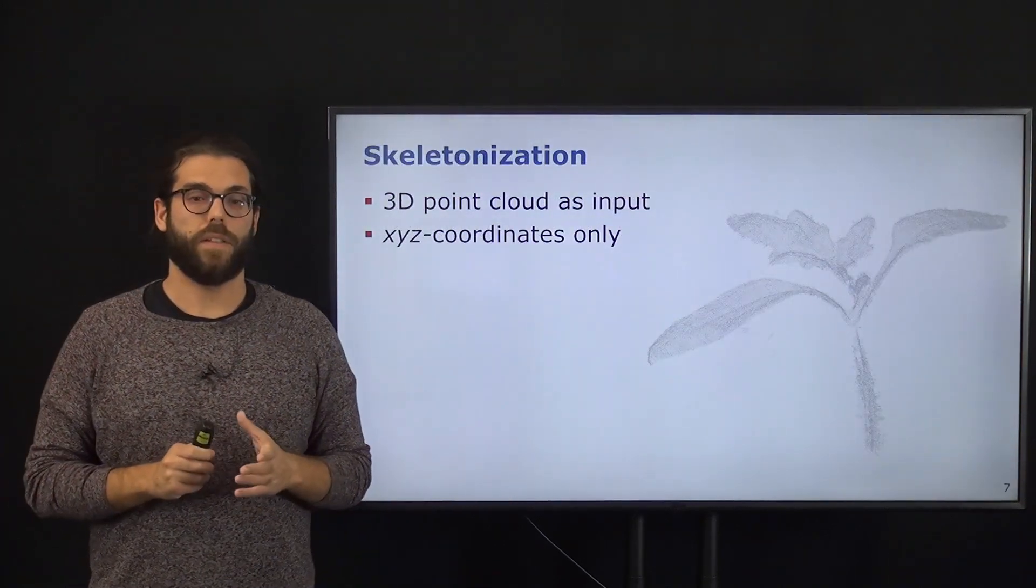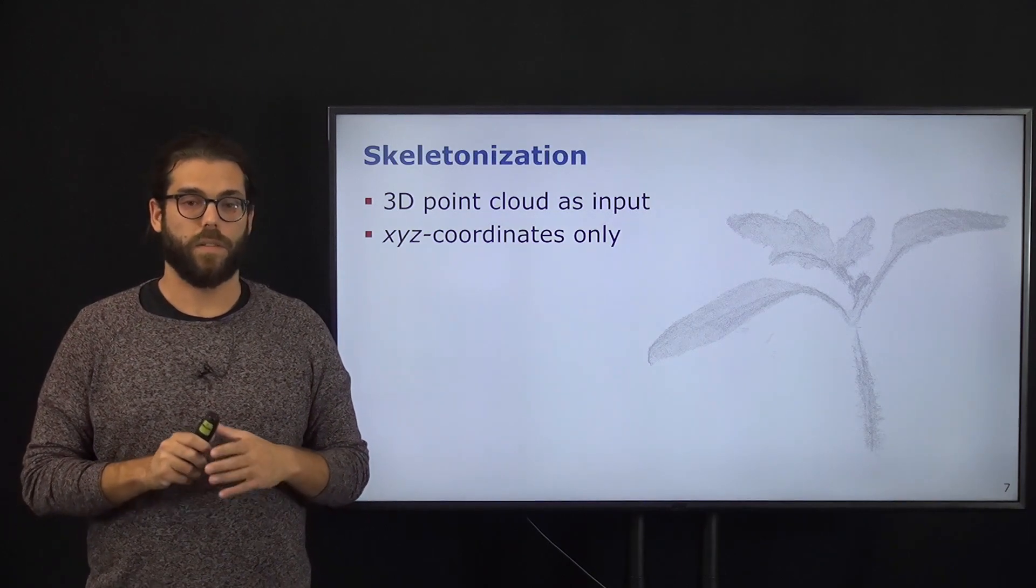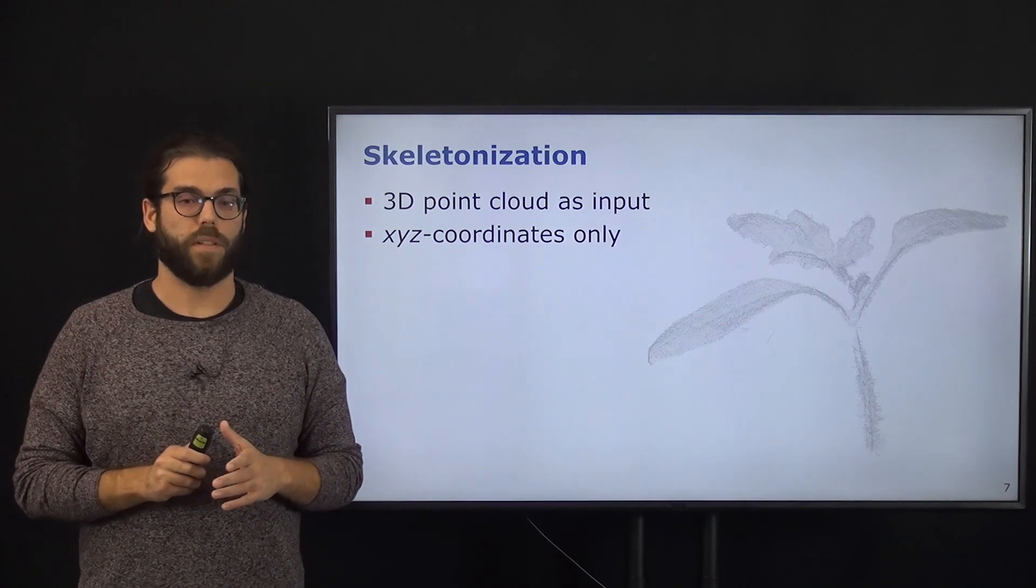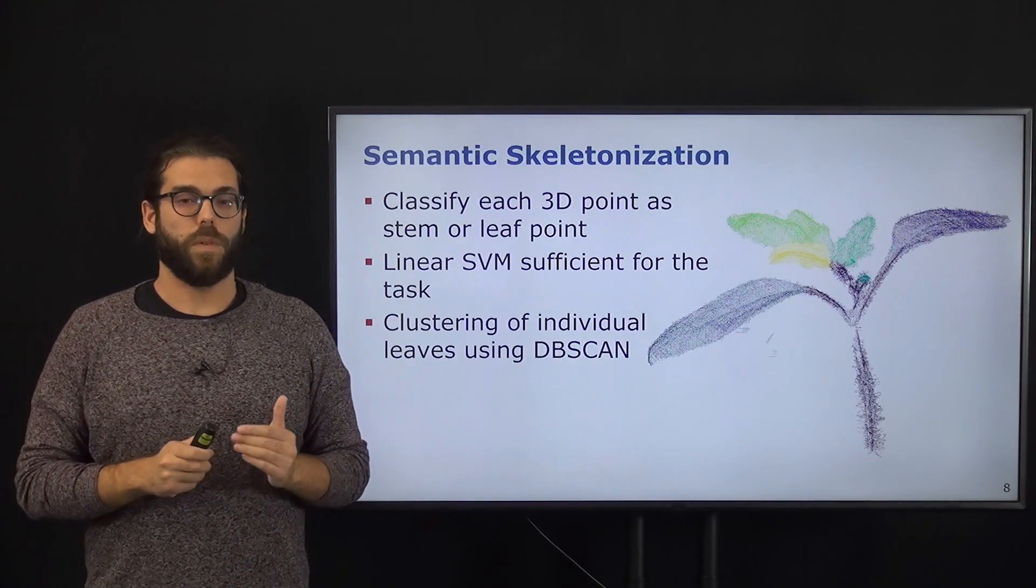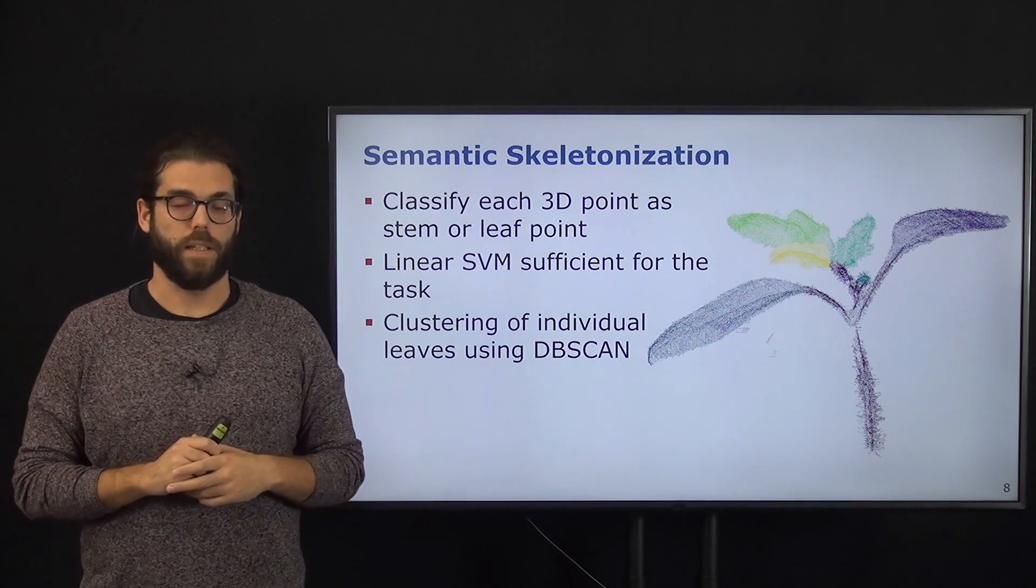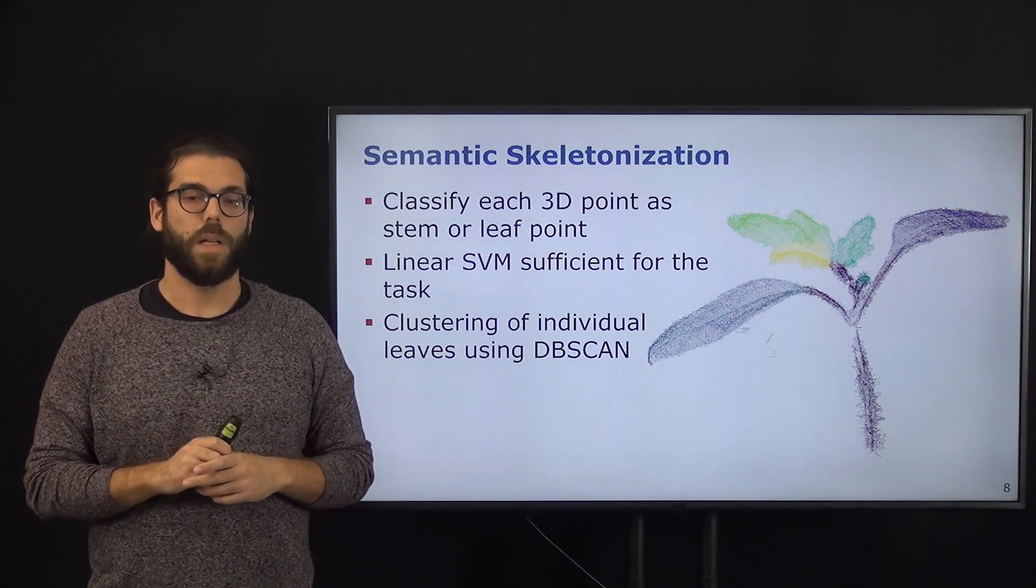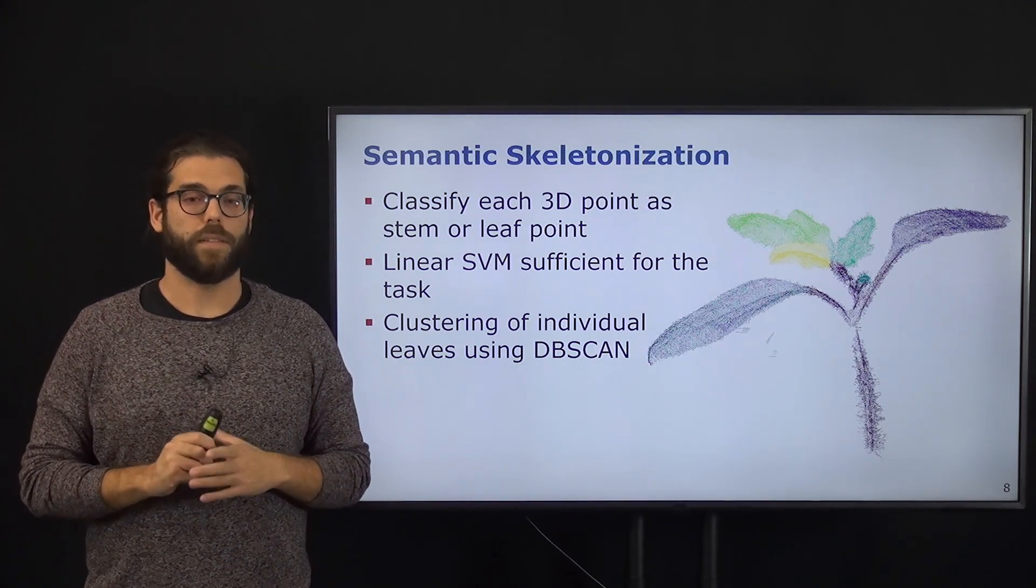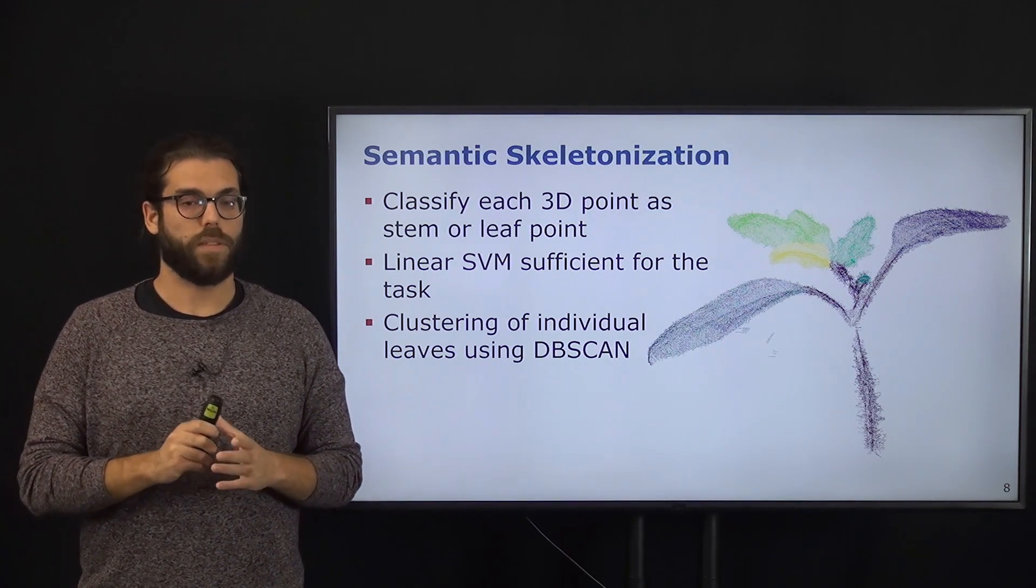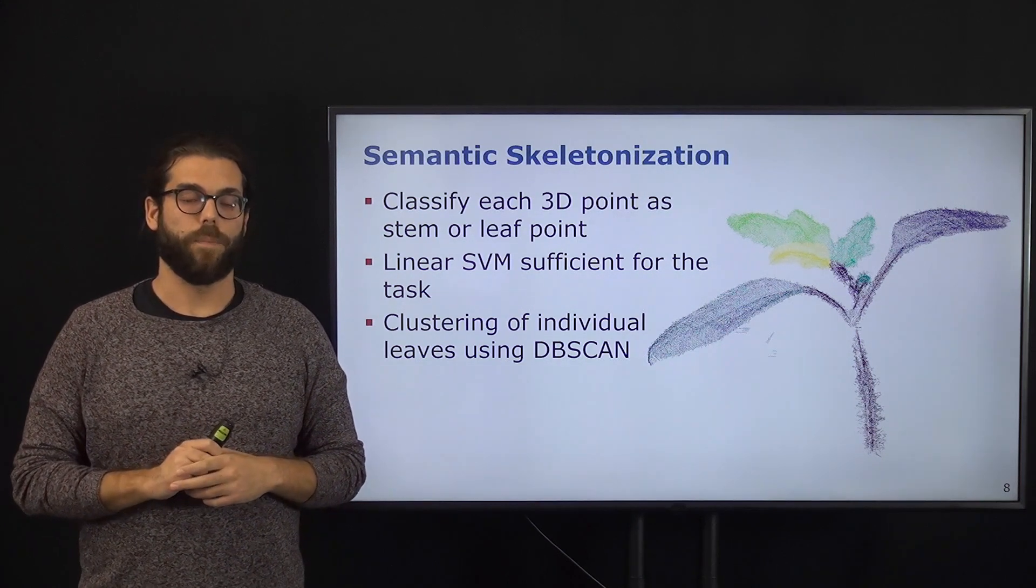To start our skeletonization approach, we only need the 3D point cloud without considering any colors or normals. The first step is to compute the fast point feature histogram for each point. Then, based on this feature, we will classify each point as stem or leaf using an SVM. After this binary classification,